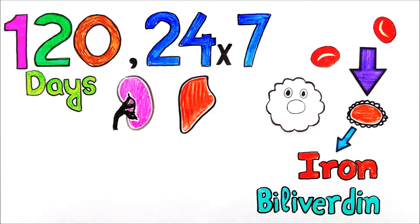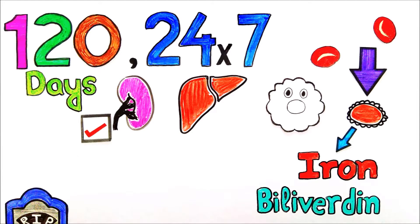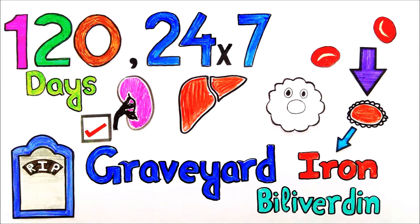This breakdown process can also take place in liver and spleen. But most of the eryptosis occurs in spleen, that is why it is known as graveyard of RBC.